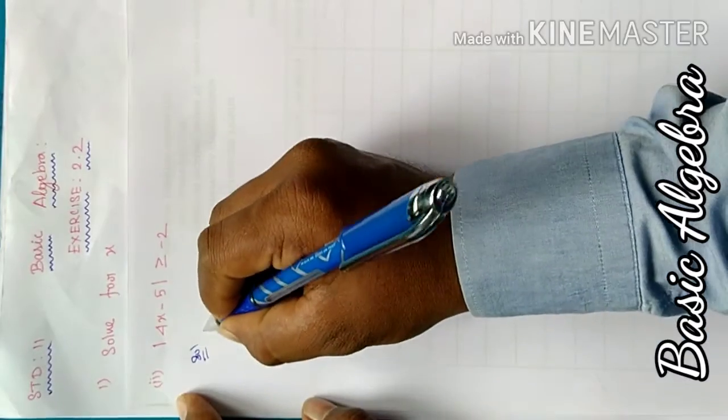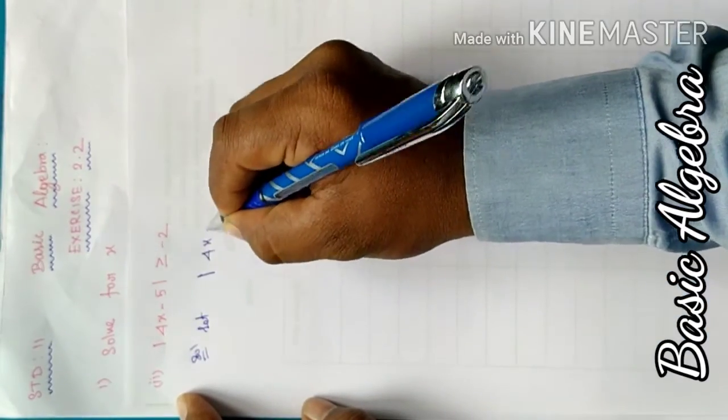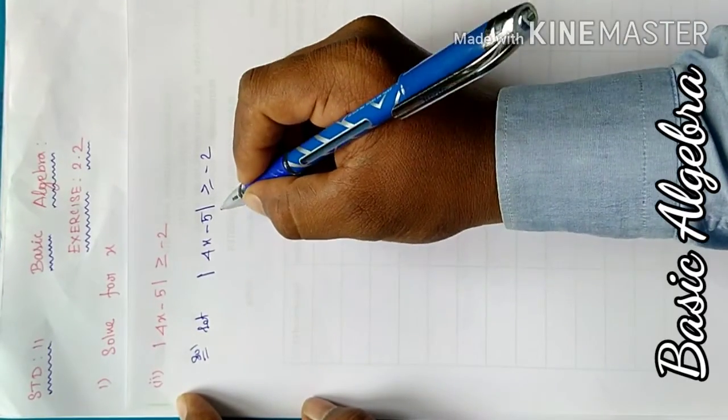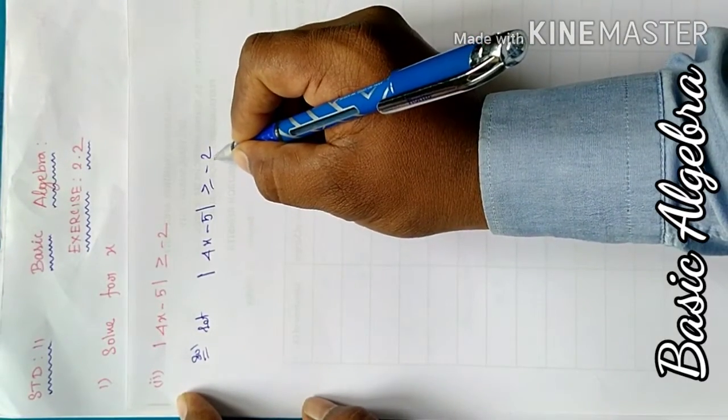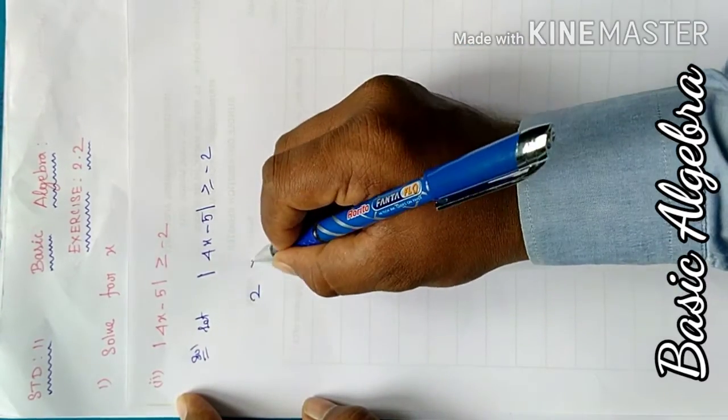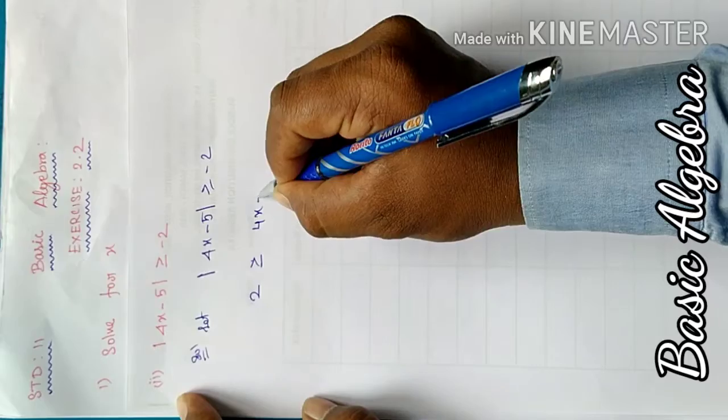Solution: Let |4x - 5| ≥ -2. When we open the modulus, the -2 becomes positive 2. Therefore we get: 2 ≥ 4x - 5 ≥ -2.